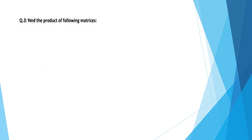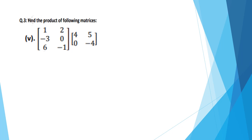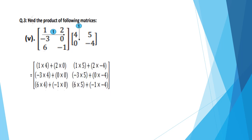Question number 3: find the product of the following matrices. First of all, we check the order of both matrices. The first matrix has two columns and the second matrix has two rows — order is the same, so it is conformable for multiplication. For multiplication, we multiply the first row with the first column, first row with the second column, then move to the second row, and so on.